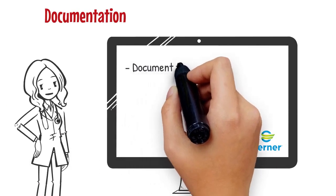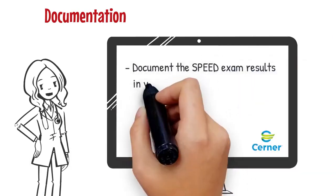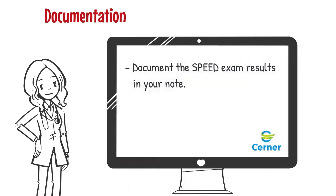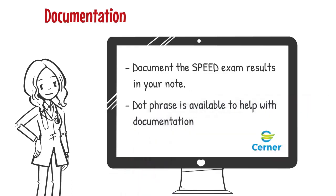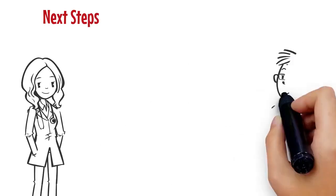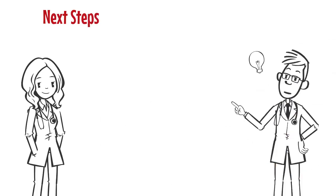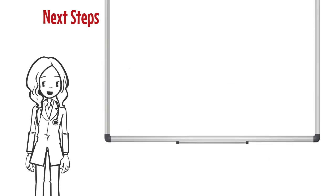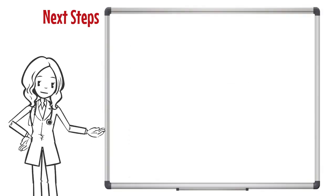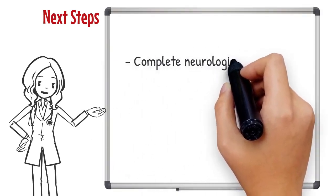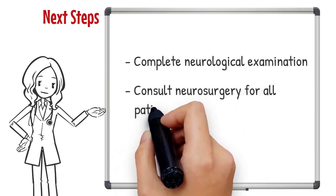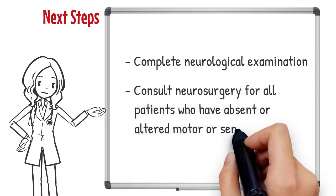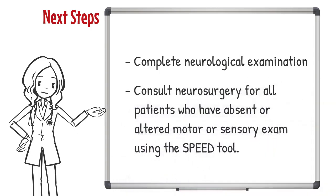Make sure that you document the results of the SPEED exam in your note. A dot phrase is available to help you with this determination. When the SPEED score is abnormal, a complete neurological examination should be performed to confirm the examination findings. Early consultation with the Neurosurgical Service is the appropriate next step in this setting.